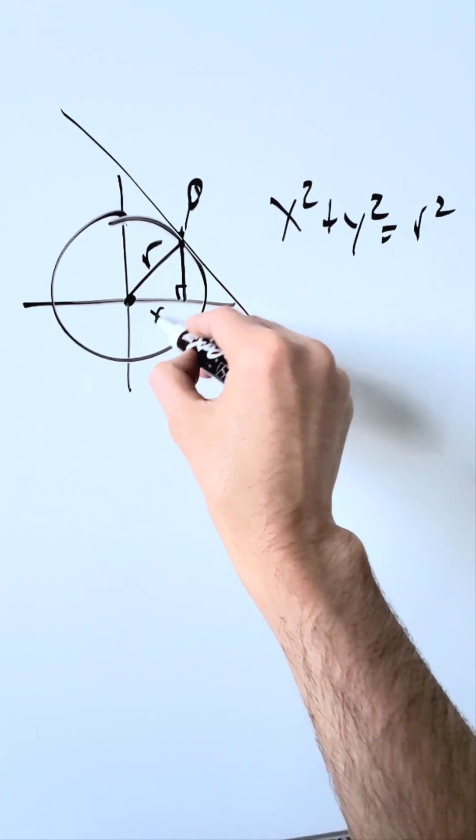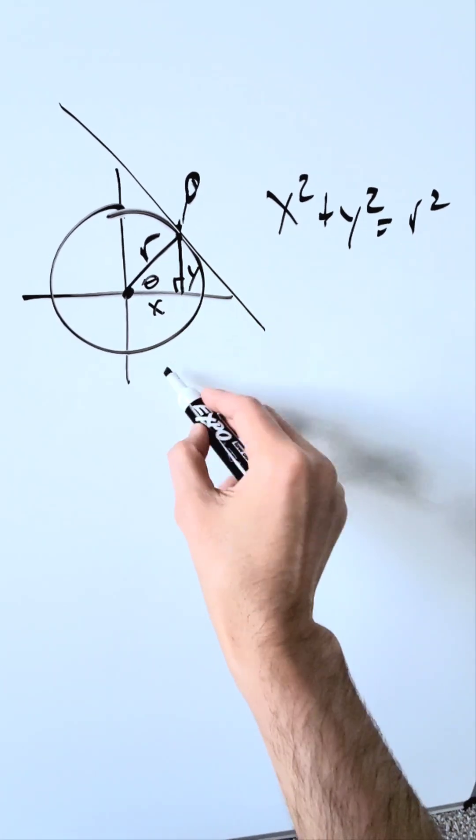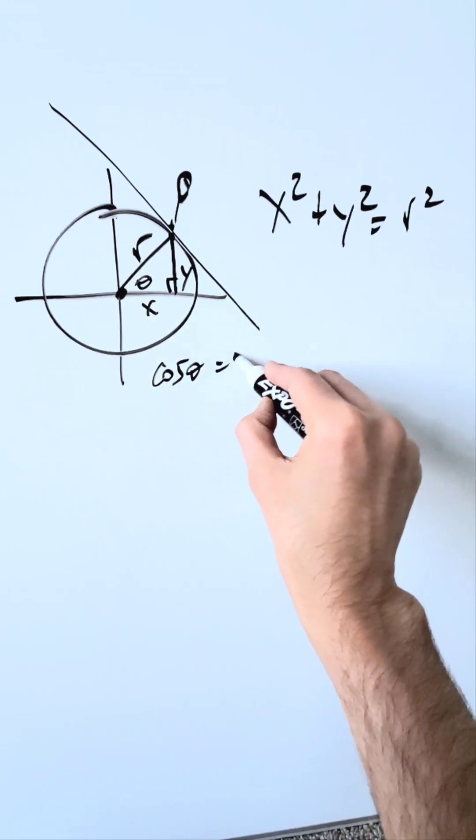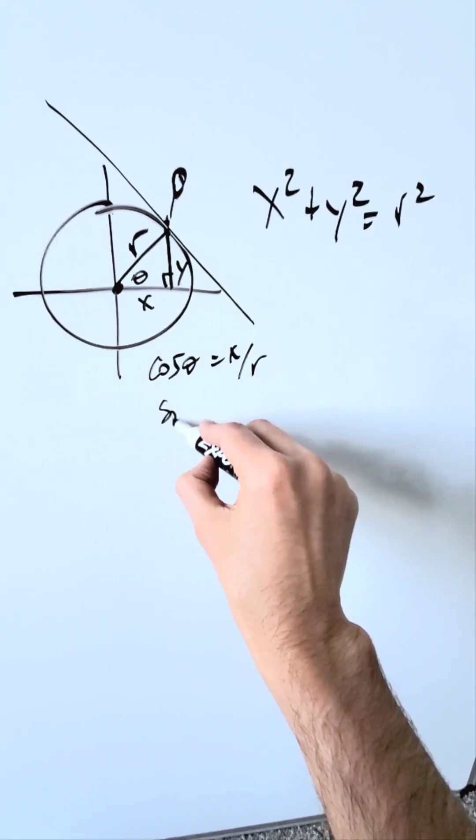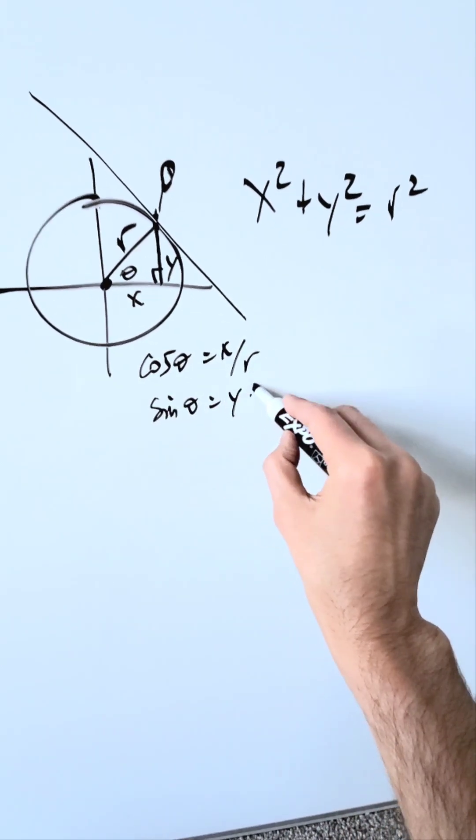Draw here a right triangle. Here's an x, here's a y, here's a certain angle theta. Cosine of that angle theta is equal to x over r. Sine of that angle theta is equal to y over r.